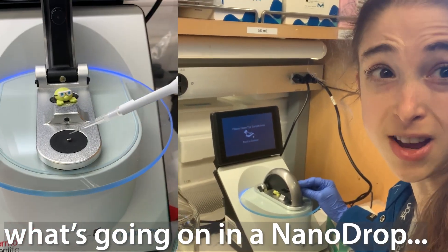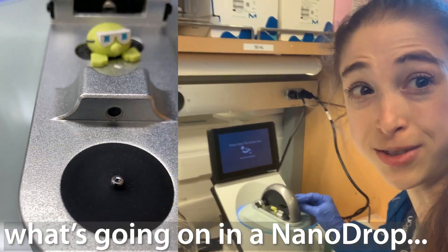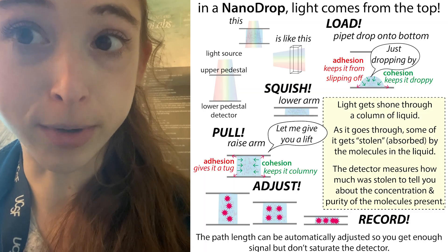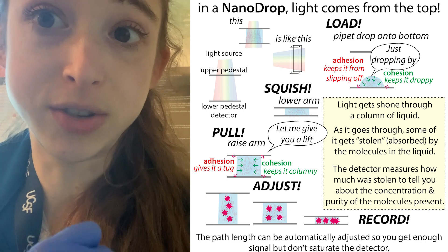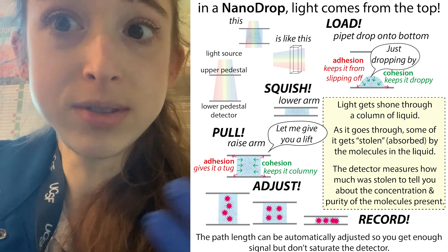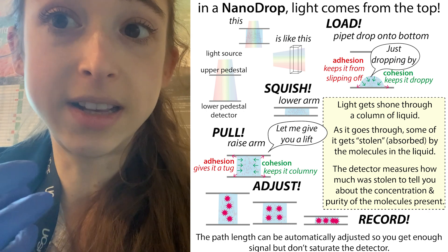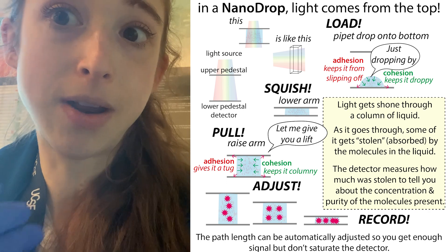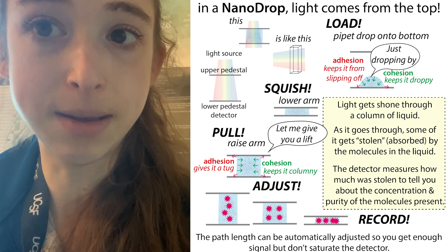When measuring concentrations, do you ever stop and think about what goes on behind the scenes of a nanodrop? It's really cool. A nanodrop is a type of spectrophotometer - scary word - but it basically shines light and measures how much of that light is absorbed. We can use a spectrophotometer to measure how much light is absorbed in a solution full of proteins, DNA, or RNA to figure out how much of that molecule is in the mixture.